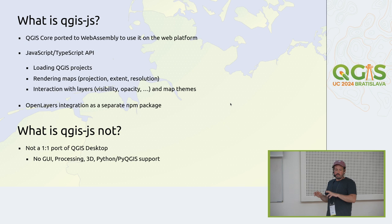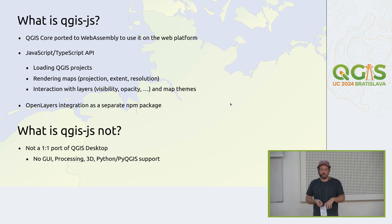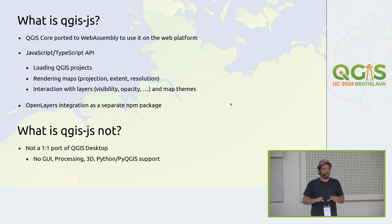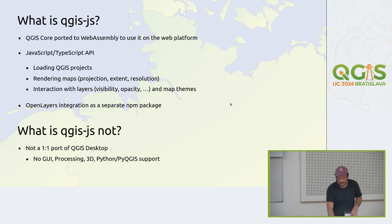What is QGIS JS not? It's not a one-to-one port of the desktop QGIS. There is no Qt-based GUI, no processing, no 3D support, no Python support. It's really just the core to render maps. Although all those things are technically possible, they are not in the scope of our project. We try to keep it small and hope we can make it even smaller.